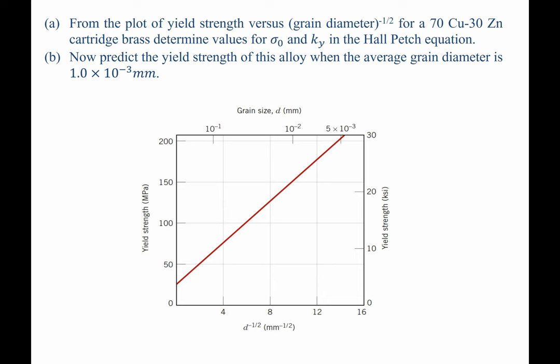We are given a plot of yield strength versus grain size to the negative one-half power for a 70-30 copper-zinc cartridge brass. From this plot, for part A,